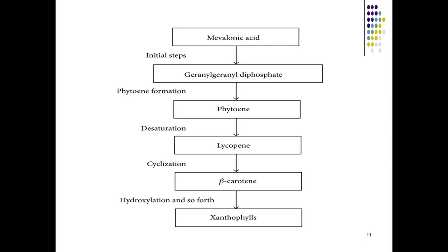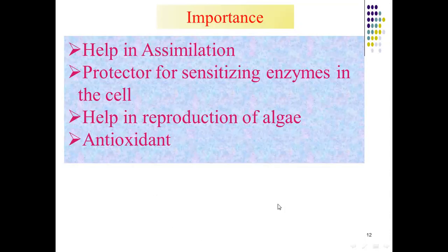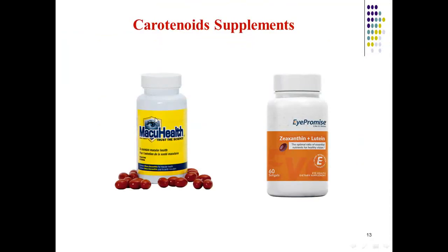The biosynthesis pathway of carotenoids starts from mevalonic acid, which is converted into geranyl diphosphate, then phytoene, then lycopene — which is found in tomatoes — and then beta-carotene, which is found in carrots. The importance of carotenoids includes assimilation, protection for sensitizing enzymes in the cell, helping the reproduction of algae, and acting as antioxidants.